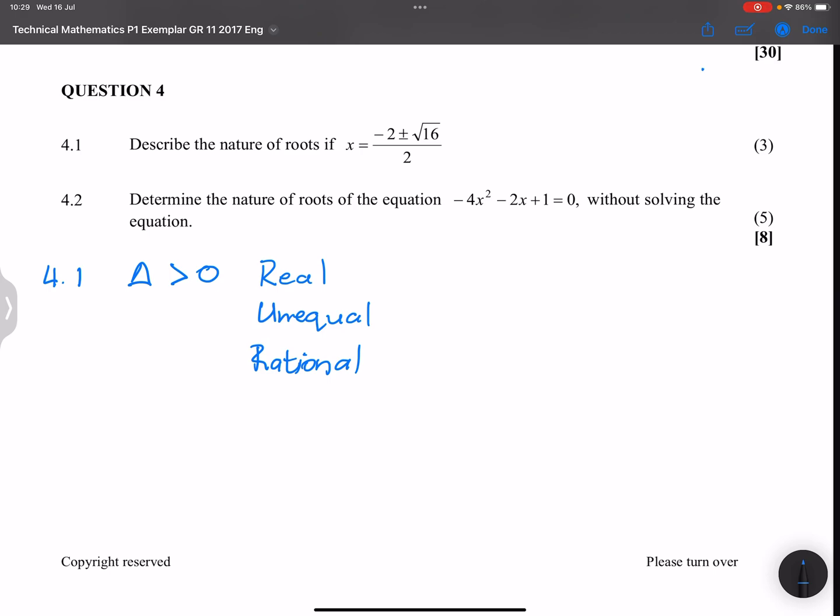Now let's go into 4.2. They say to us determine the nature of the roots of the equation without solving for the equation. What do we want to do? First, let's work out what our delta is. Our a value is negative 4, our b value is negative 2, and our c value is 1.